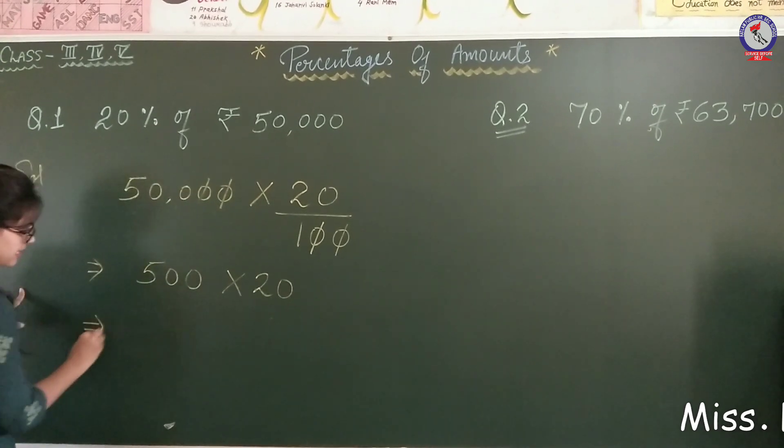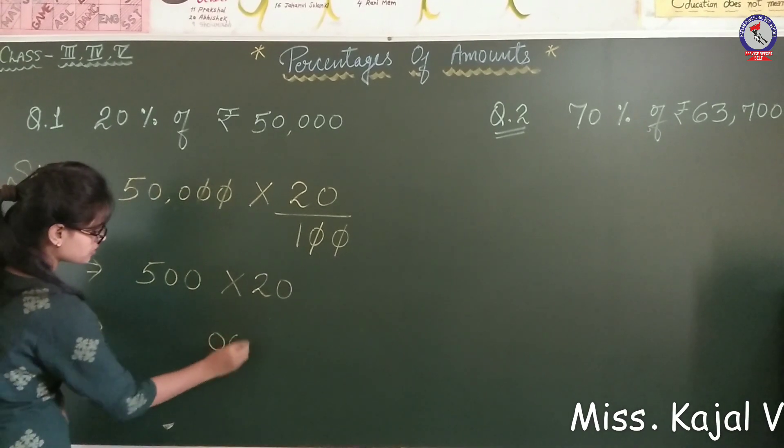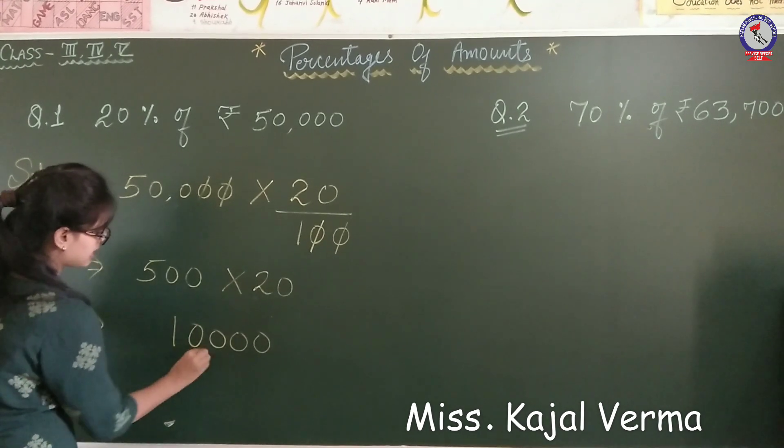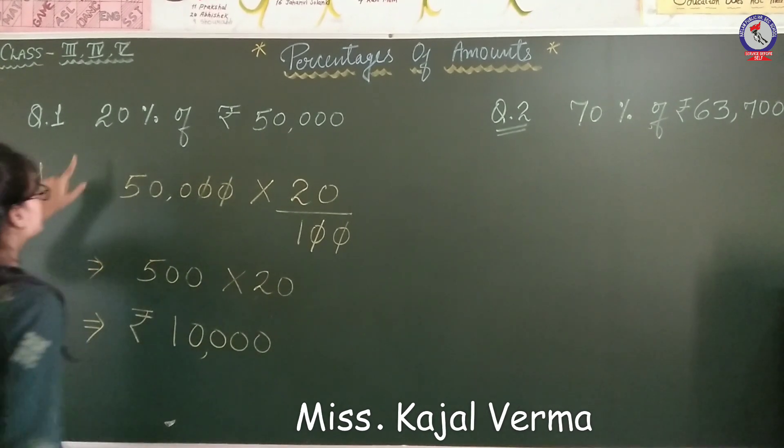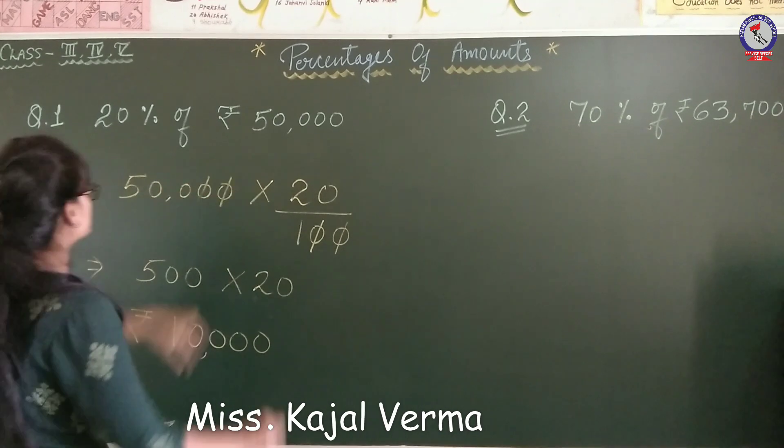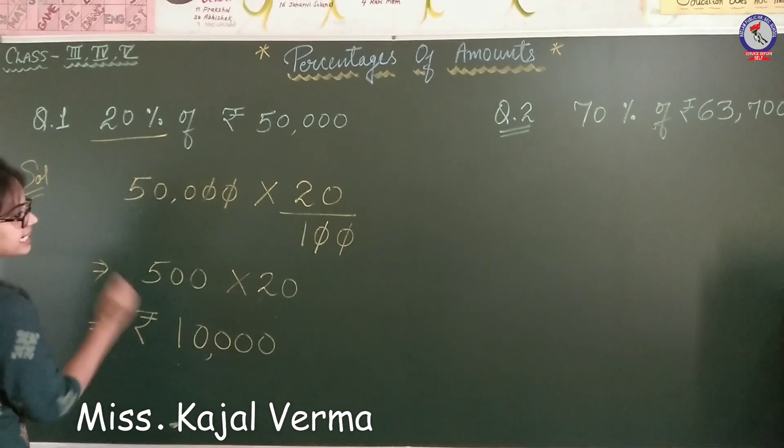Now, multiply them: 0, 0, 0, and 5 times 10. So you can see that 20% of 50,000 is 10,000.